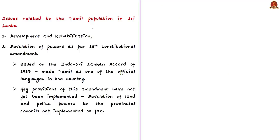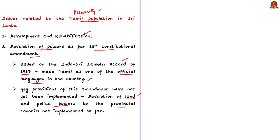There are concerns on issues related to the Tamil population, who are a minority in Sri Lanka, and the ethnic conflict was related to this Tamil population. Two key issues for Tamil people in Sri Lanka remain: development and rehabilitation, and devolution of powers as per the 13th constitutional amendment. This 13th amendment is based on the Indo-Sri Lankan Accord of 1987 and made Tamil one of the official languages in Sri Lanka. Some key provisions of this amendment have not yet been implemented — in fact, there is opposition from top leadership to implement them. The main provision is devolution of land and police powers to the provincial councils. The demand from the Indian government and Sri Lankan Tamils is to implement this devolution provision.